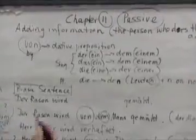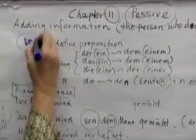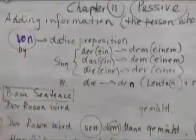Now, in order to do that, we are going to need the preposition von. And as you know, von is a dative preposition and it means by. Something is done by somebody.